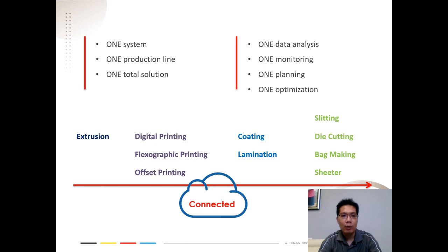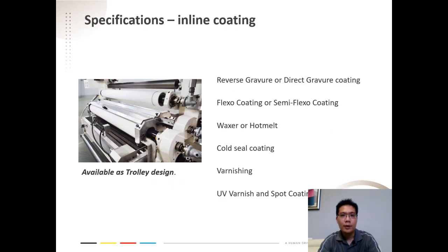All the way from extrusions, different printings, coding, lamination, to the end converting processes such as slitting, die cutting, bag making, and sheeting. Now let's go into the details of what KYMC can provide.